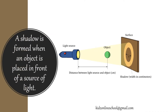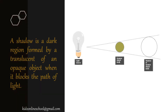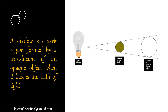What is Shadow? A shadow is formed when an object is placed in front of a source of light. A shadow is a darker region formed by a translucent or an opaque object when it blocks the path of light.